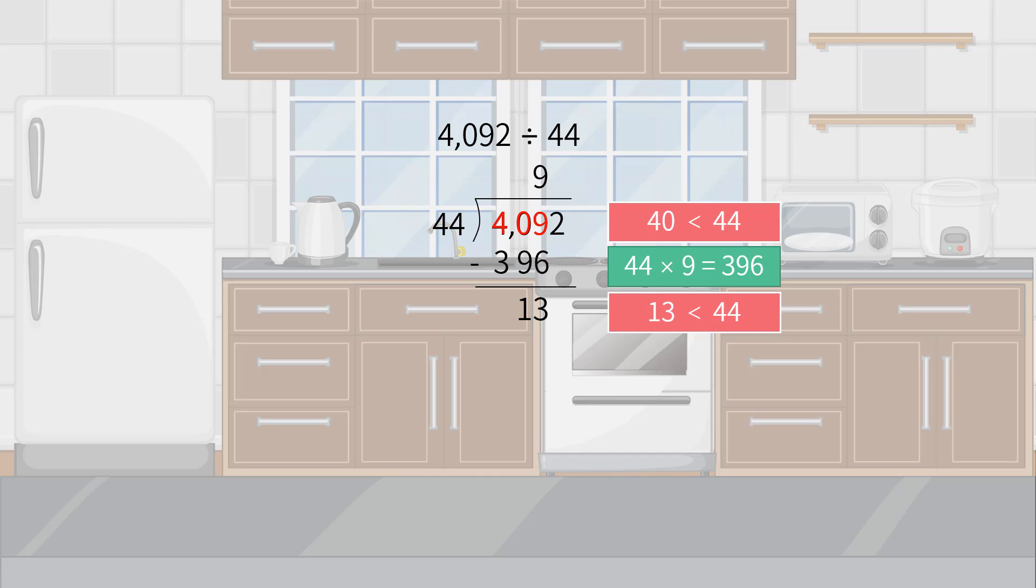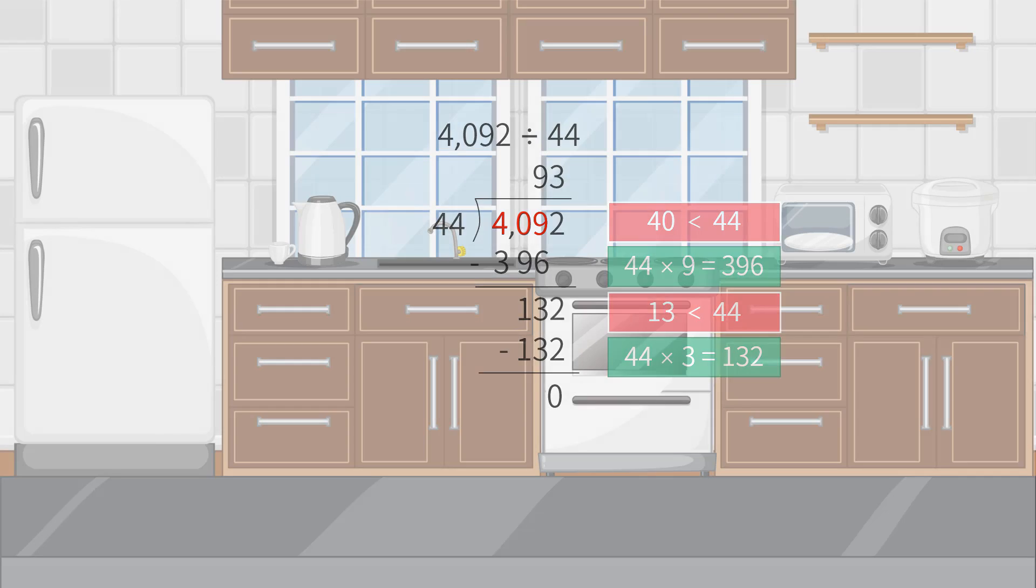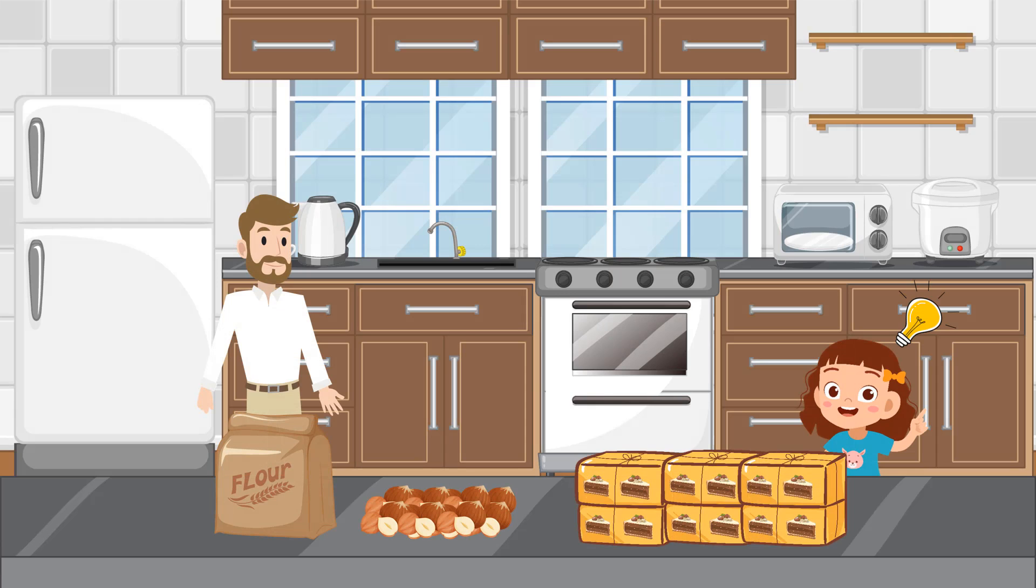Then we multiply the quotient and divisor again and subtract the product from the dividend. Finally, we find the quotient is 93 with no remainder. So we know that the butter Uncle Josh had could be made into exactly 93 cakes.